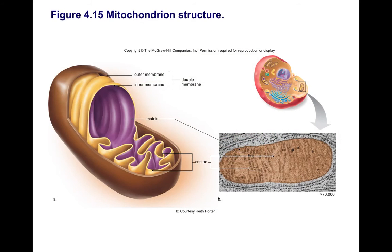Now let's look at mitochondria. Whereas chloroplasts are only found in plants — since animals such as humans cannot do photosynthesis — mitochondria are found both in plant and animal cells. You would really need an electron microscope to see them, so if you have had a chance to look at cells with a light microscope, do not try to find a mitochondria with that method — it is not going to happen.